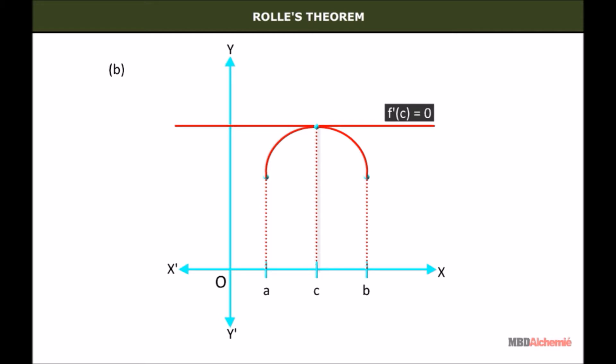the tangent is parallel to the x-axis. That is, here the derivative of the function is 0, and this point lies between a and b. Thus,